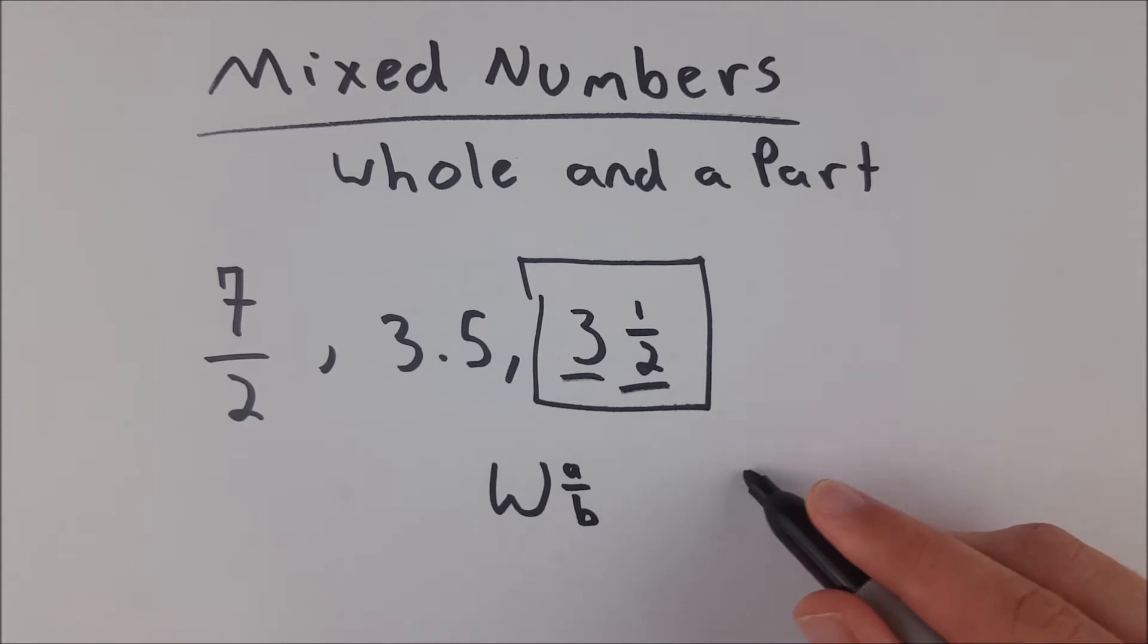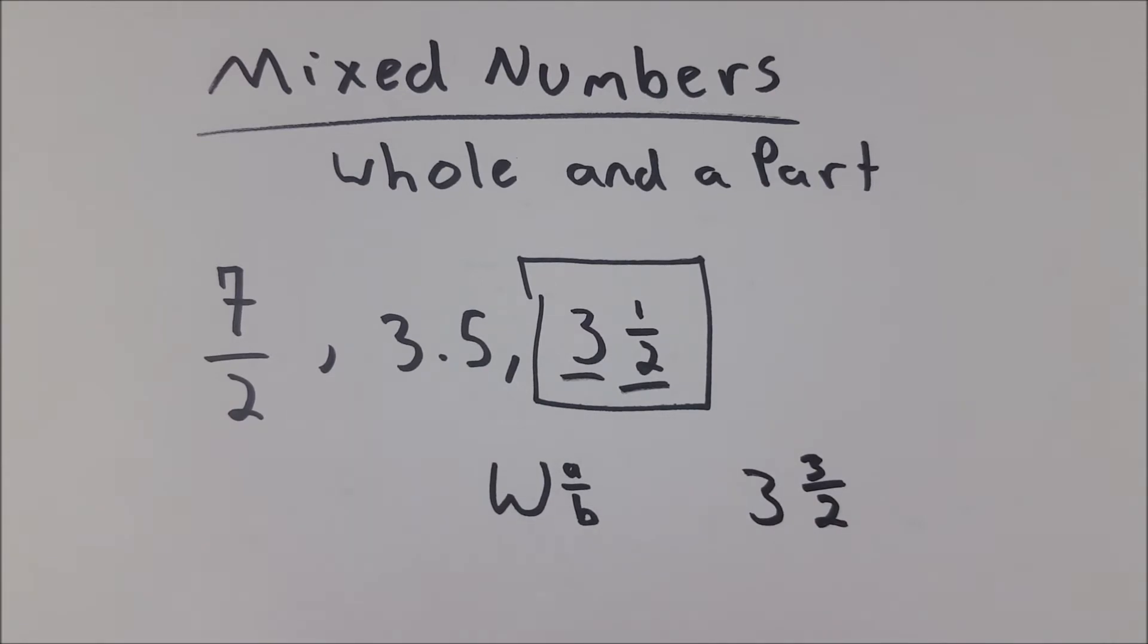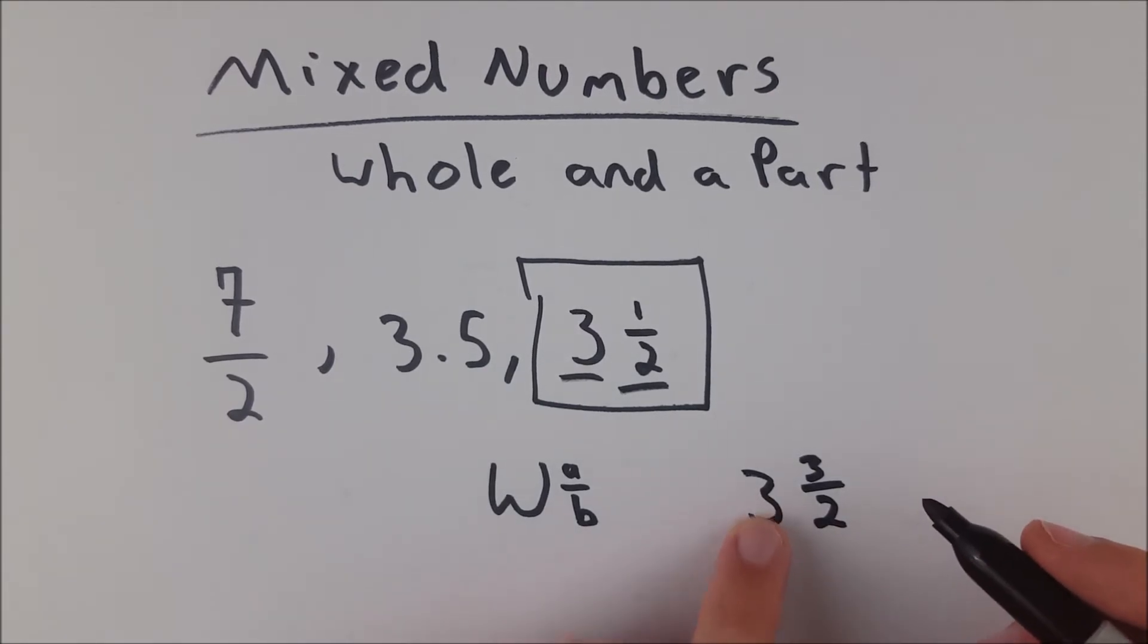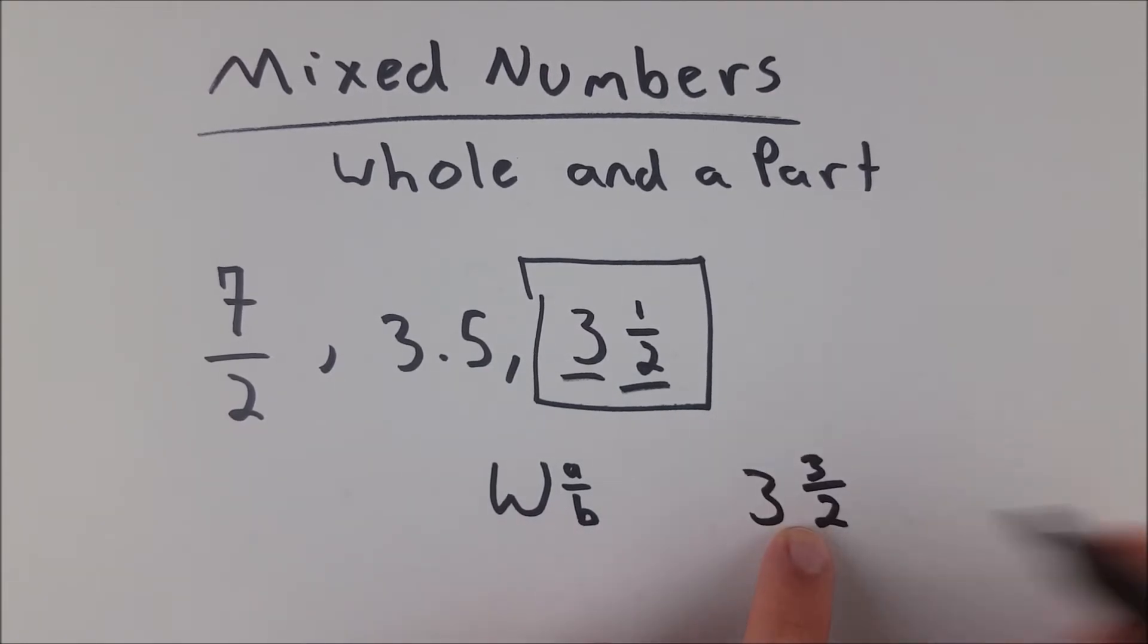if I wrote a mixed number, three and let's say three halves, this is an improper fraction. I would not want to write my mixed number like this. This is a very foolish thing to do because of course I can add another whole to this because I have an improper fraction here.